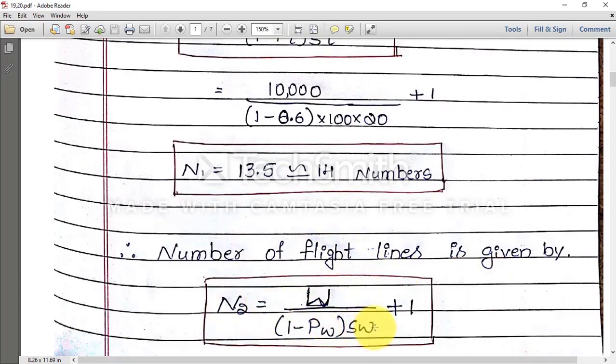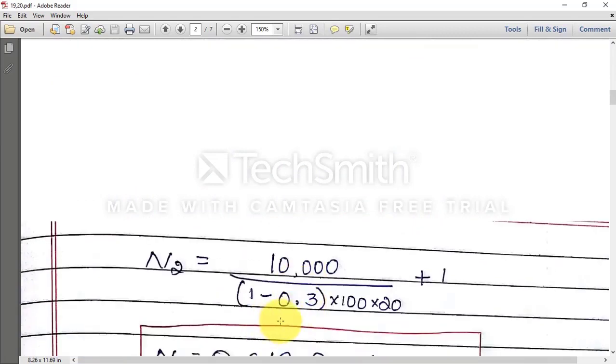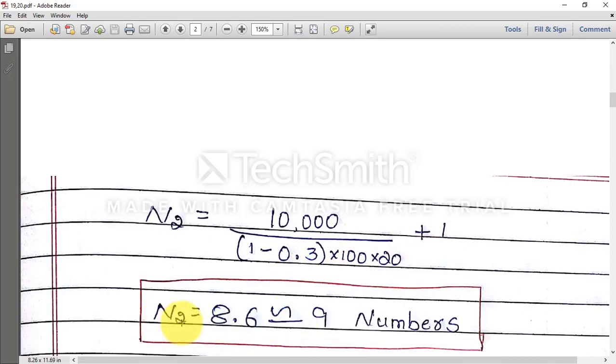Substitute W = 10,000, 1 - 0.3 × 100 × 20 + 1, and N2 = 8.6 equal to 9 numbers. Again here also you need to convert to round up to 9.